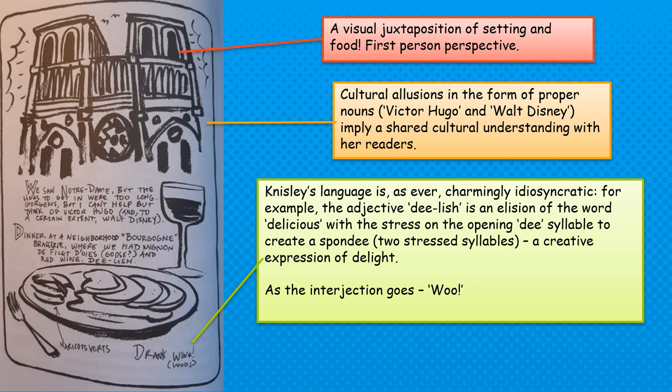Her language is, as ever, idiosyncratic and quite charmingly so. Her food is 'delish' — this is an elision of the word 'delicious': rather than three syllables, it's chopped down to two, with the stress on the opening D, which wouldn't normally be stressed. In poetry we would describe that as a spondee, because it has two stressed syllables. 'Delish' — a creative expression of delight, very idiosyncratic, very personal. And we've got to the end, so — as the interjection goes — woo!